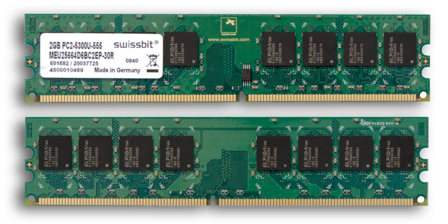The two widely used forms of modern RAM are Static RAM and Dynamic RAM. In SRAM, a bit of data is stored using the state of a 6-transistor memory cell. This form of RAM is more expensive to produce, but is generally faster and requires less dynamic power than DRAM. In modern computers, SRAM is often used as cache memory for the CPU.